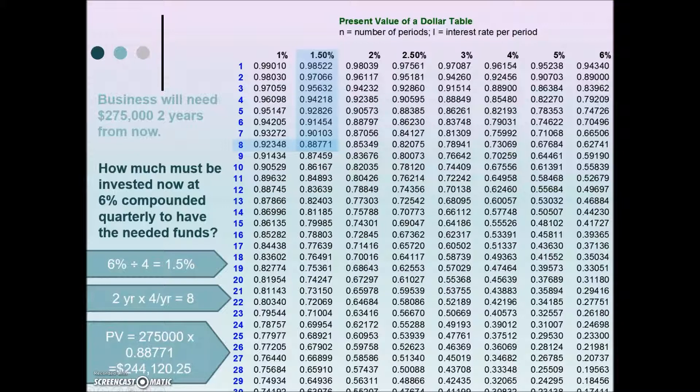For the $275,000 future value in 2 years to be a reality, we would need to have $244,120.25 today, present value.